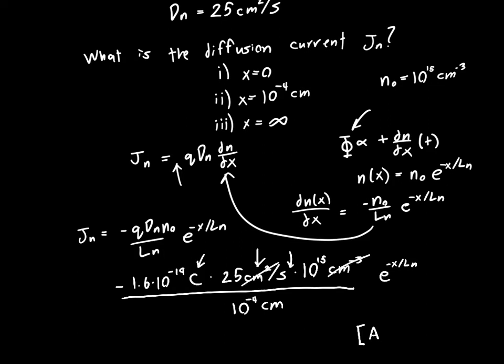and gives us a centimeter to the minus 1 on top. And then this cancels with the centimeters on the bottom to give us a centimeters minus 2, or ampere per centimeter squared.